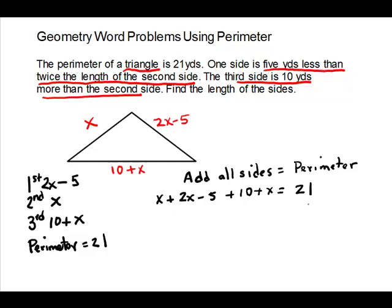Now we have an equation, let's clean it up. Combining the x terms: 1 plus 2 plus 1 gives us 4x. The constants: minus 5 plus 10 gives us plus 5. So our equation is 4x plus 5 equals 21.